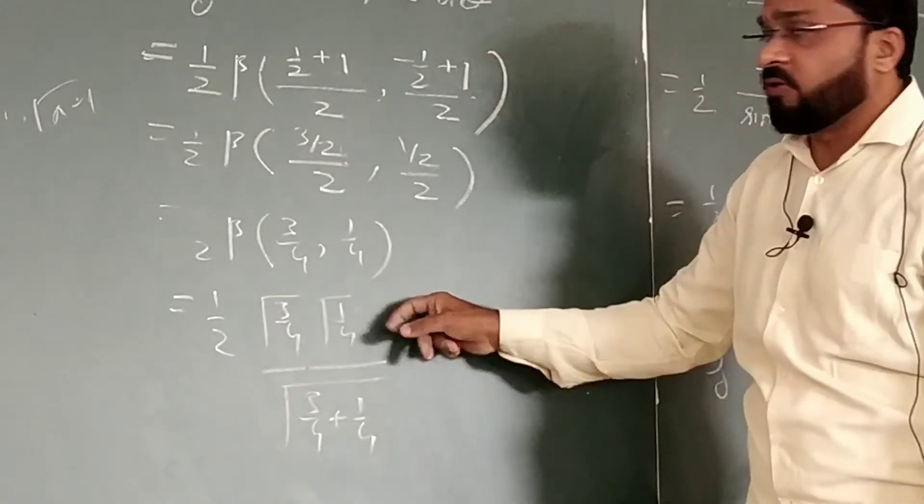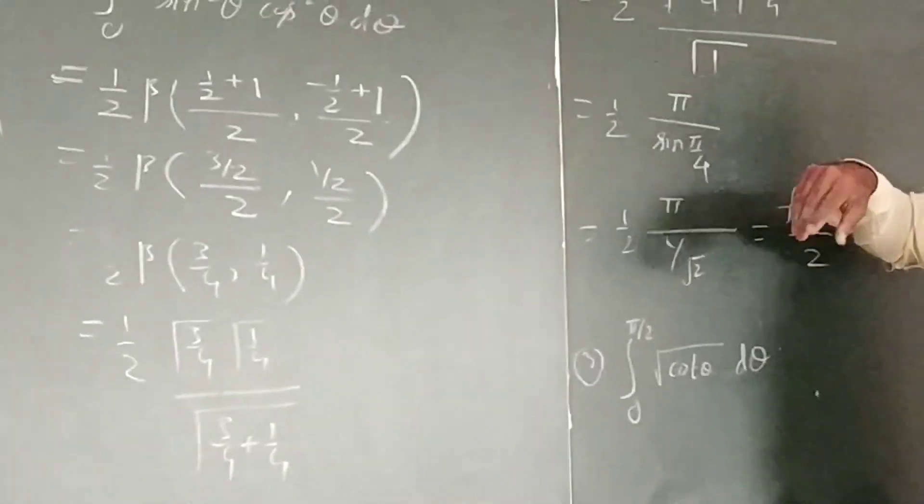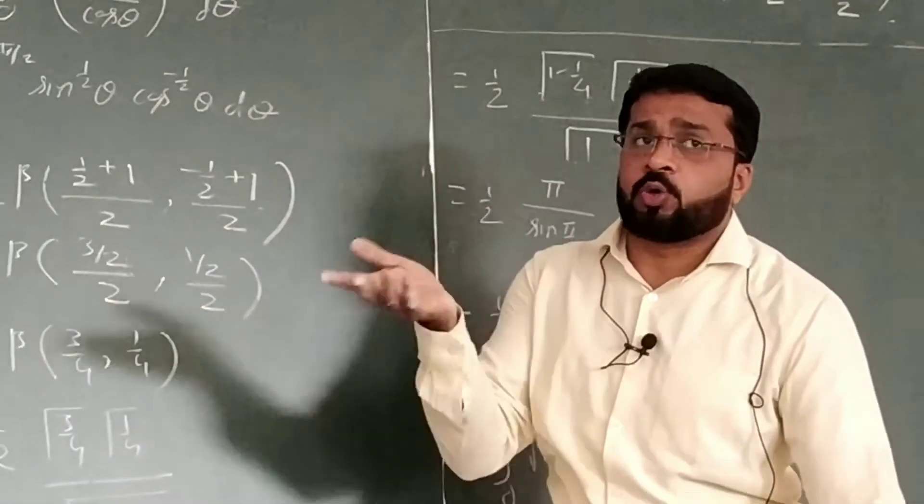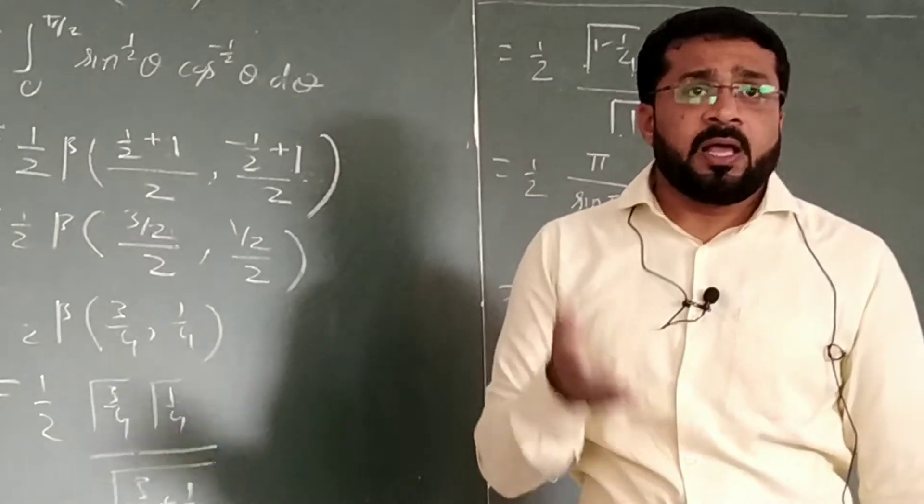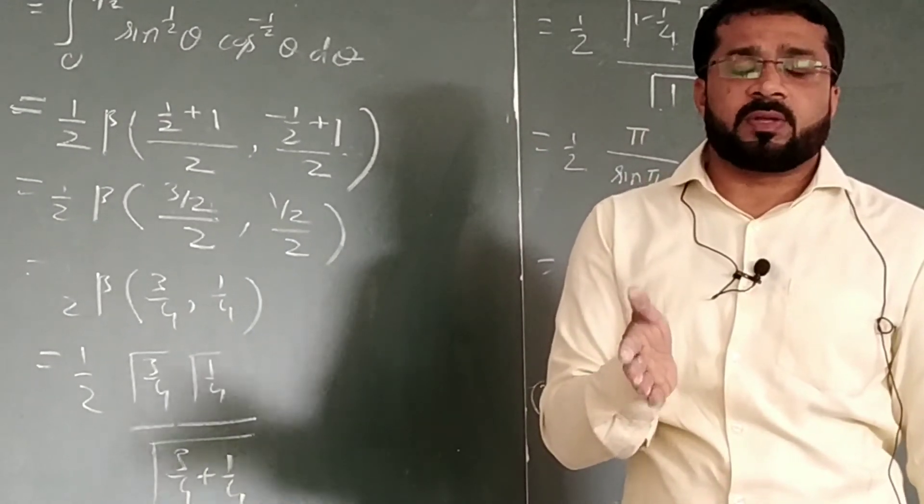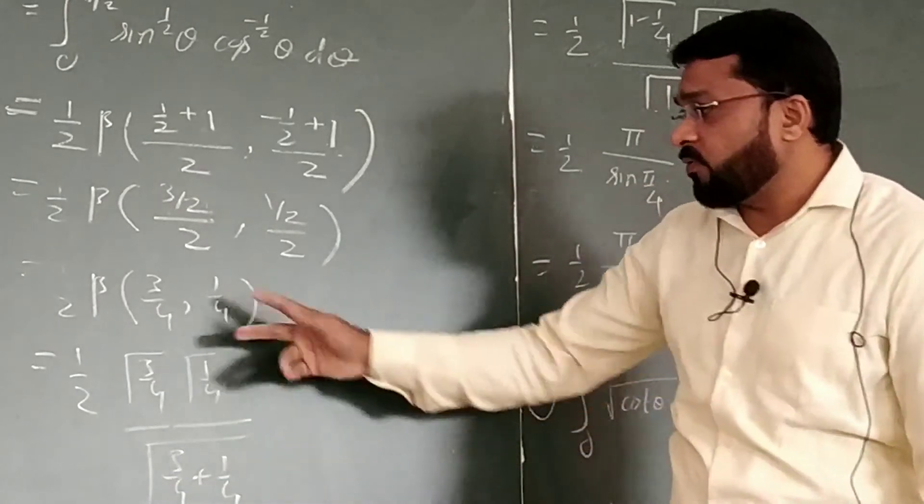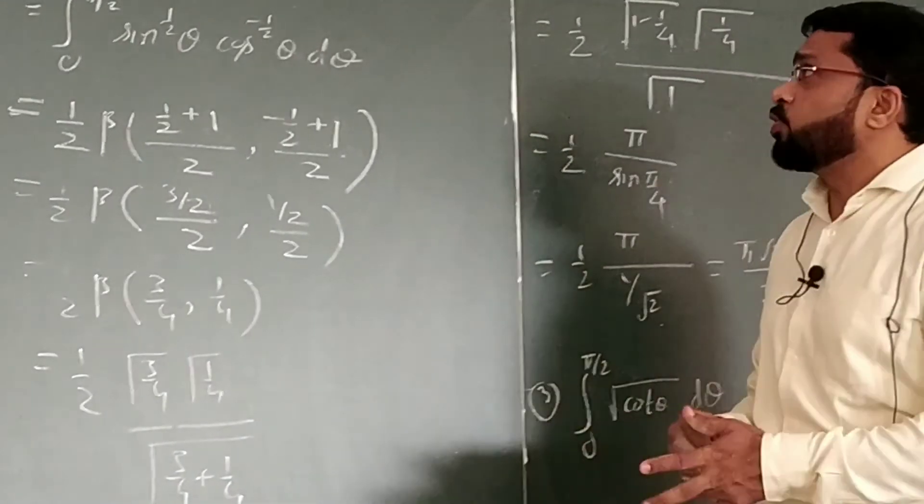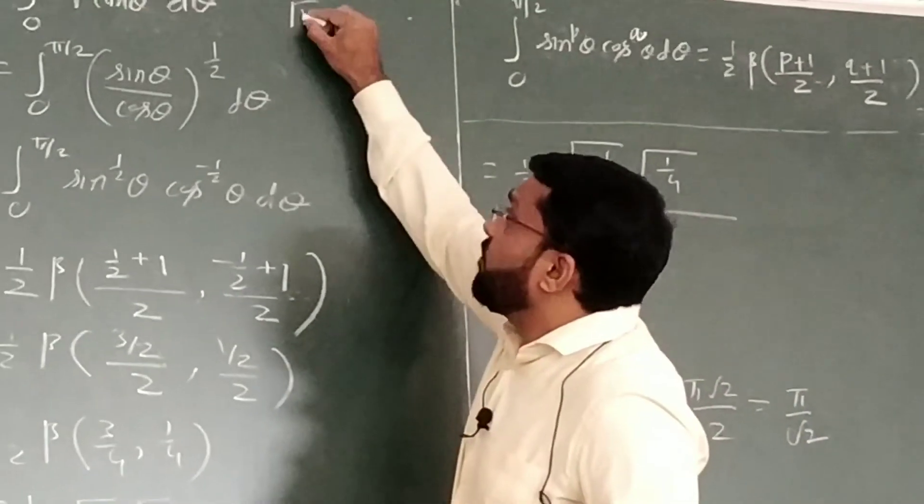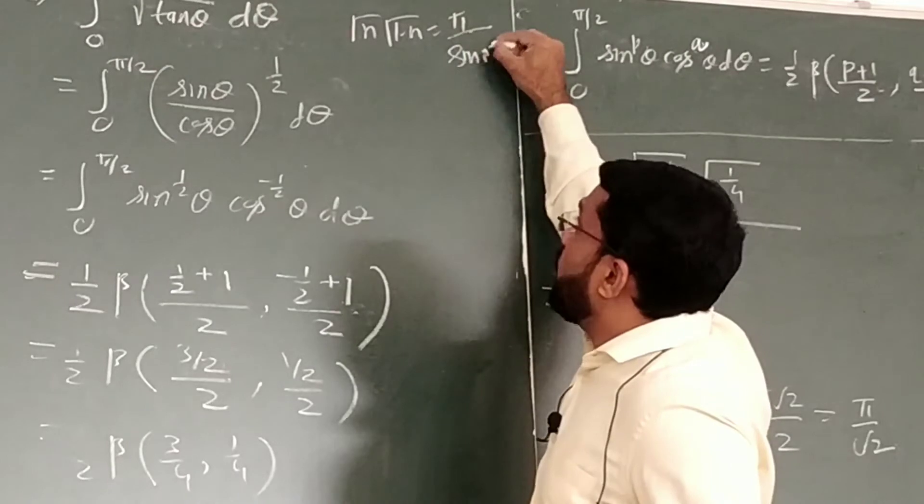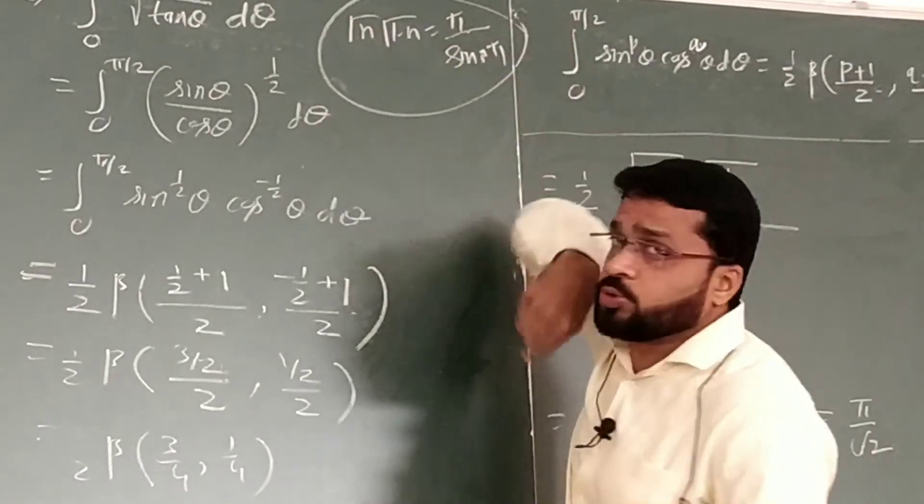So, gamma of 3/4 or 1/4, if left by 2, we directly apply formula. If integers come, we directly use factorial formula, but here it is 3/4, 1/4, so which formula to use? That is gamma of n, gamma of 1 minus n, it is π upon sin of nπ. This formula we always use.